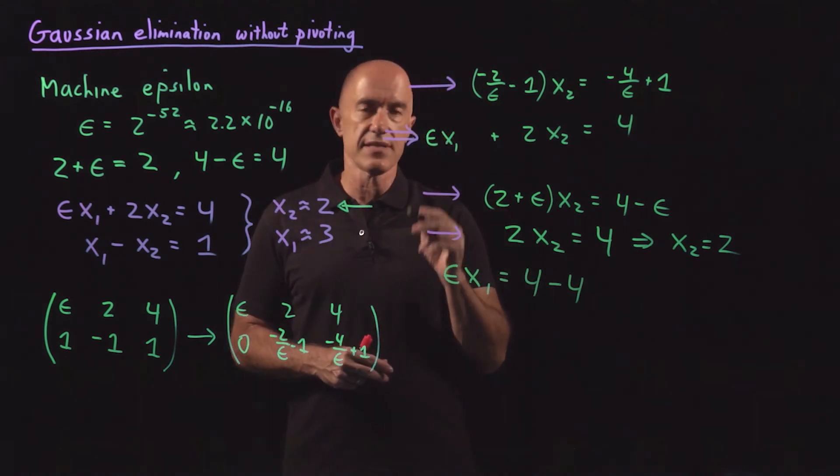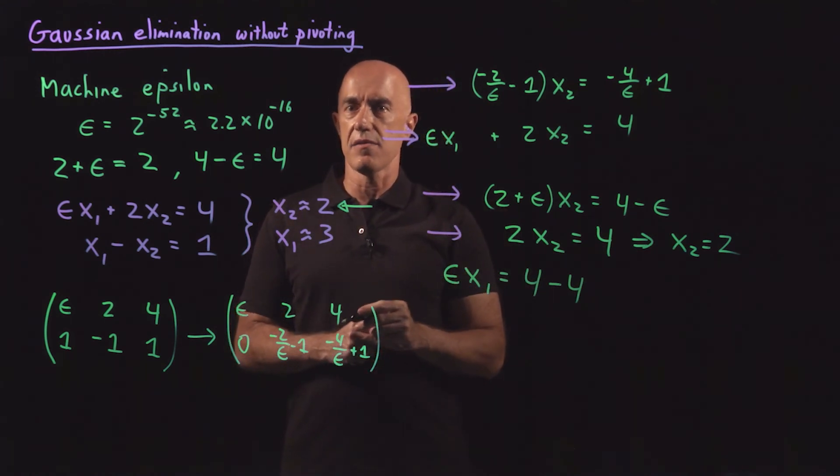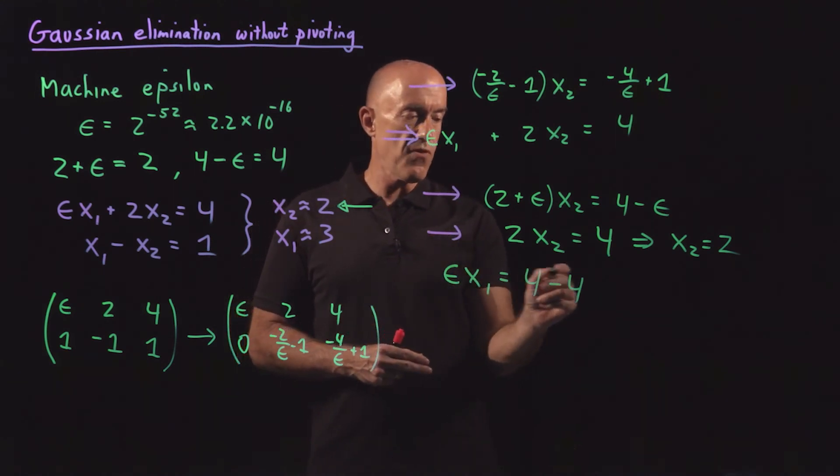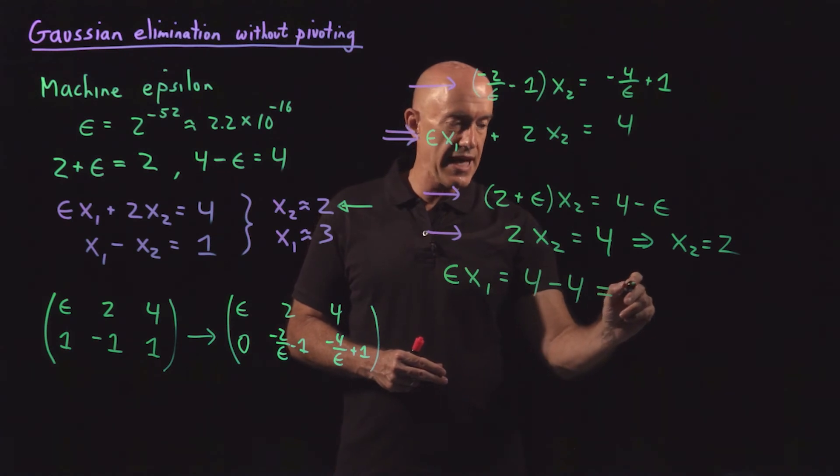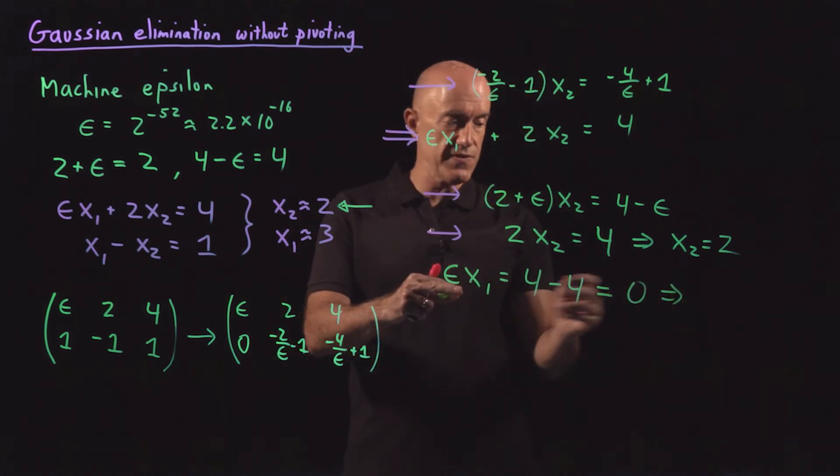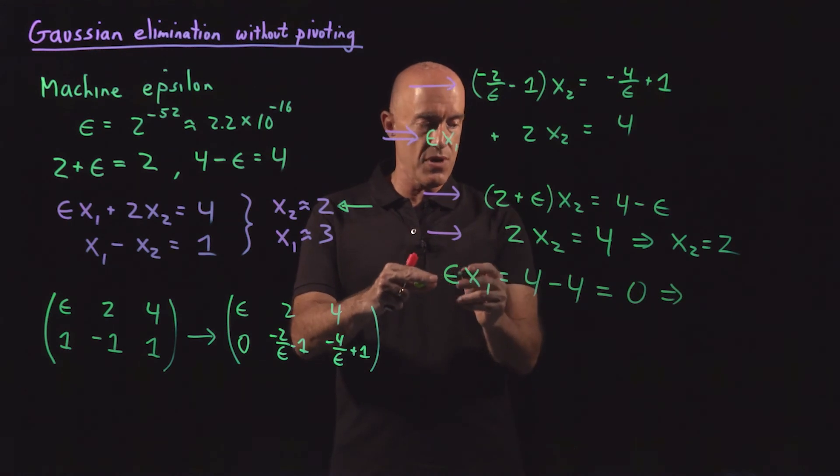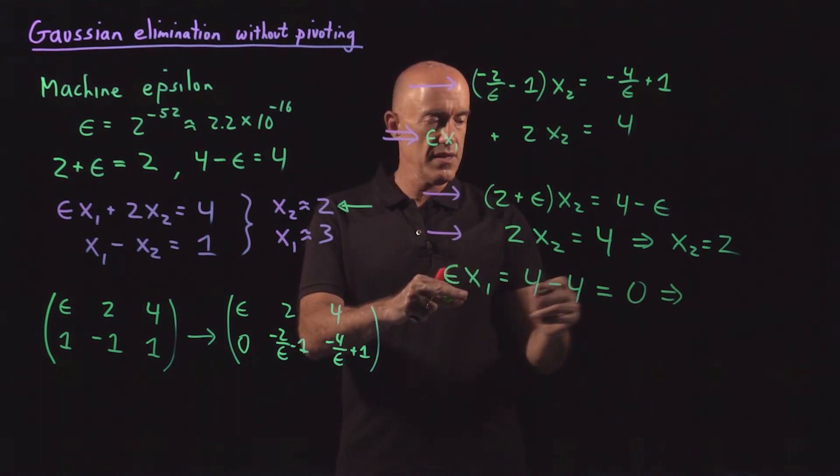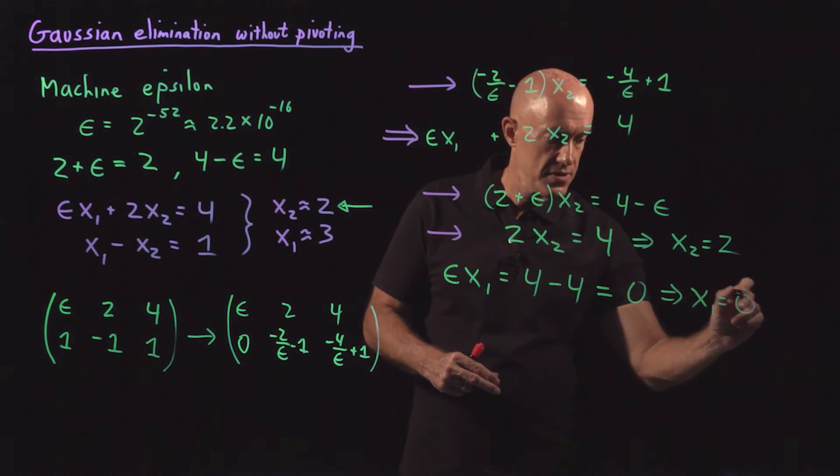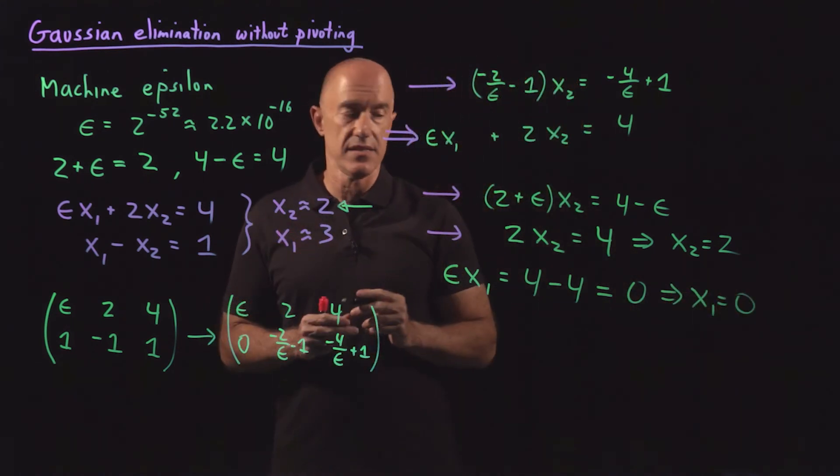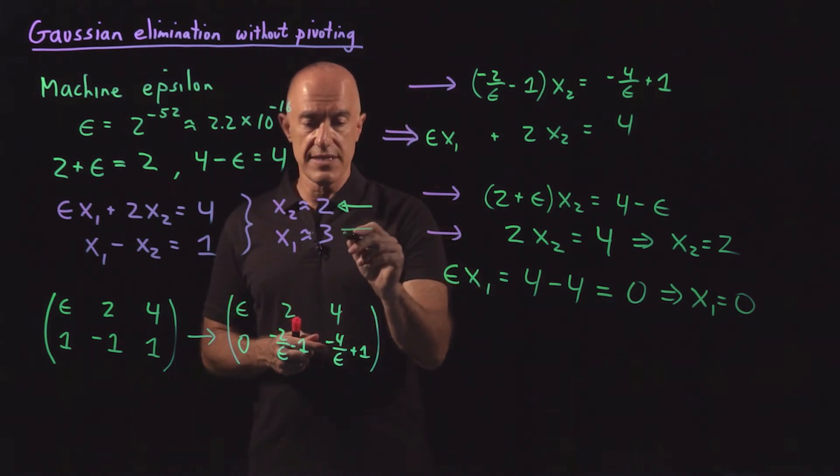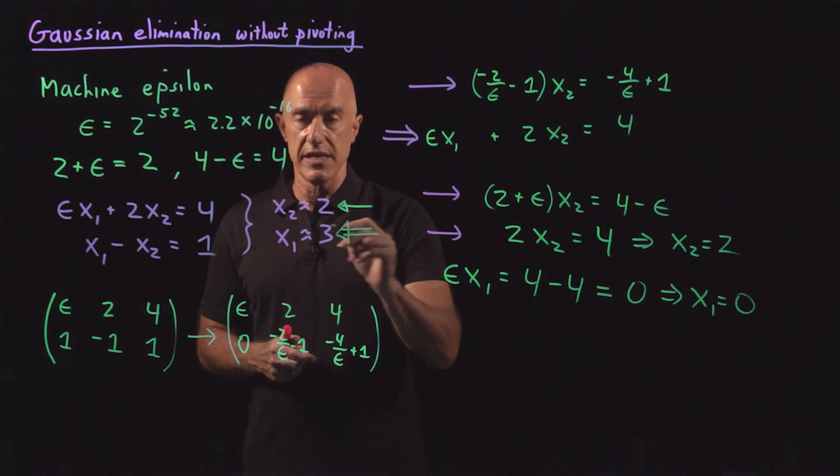x2 is the integer 2. It's not approximately 2. It's exactly 2. So 4 minus 4 is exactly 0. x2 equals 0. Which, when we solve this for epsilon, a very small number times x1 gives us 0, means x1 equals 0. Exactly 0. That's a problem because x1 is approximately 3.